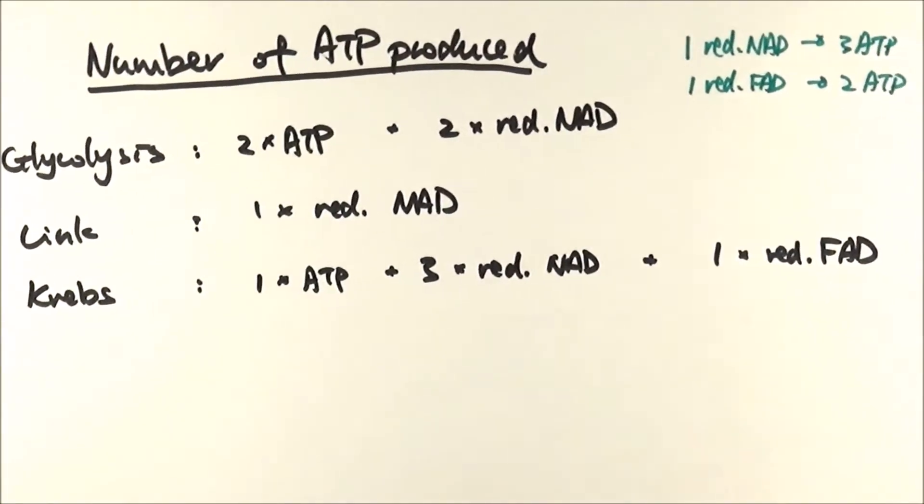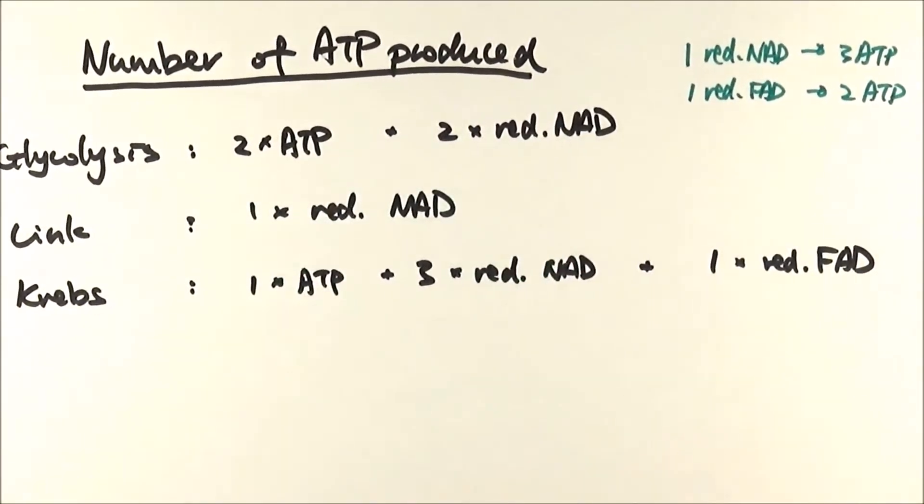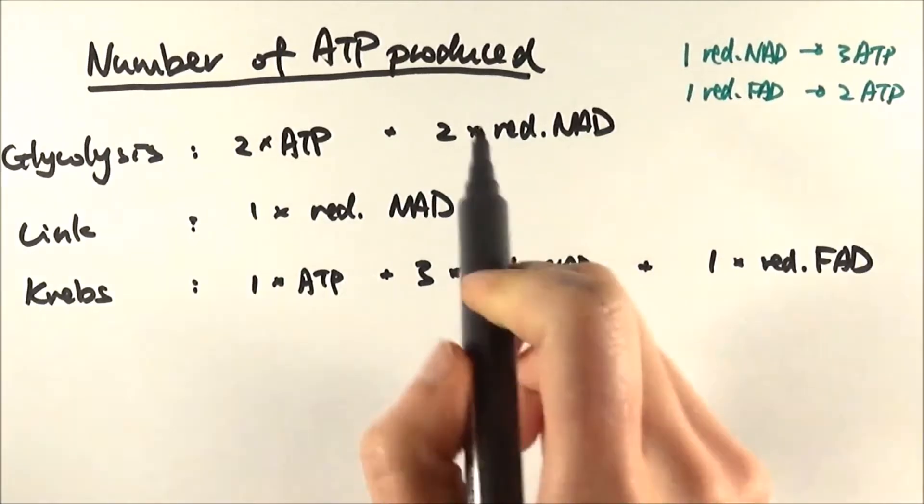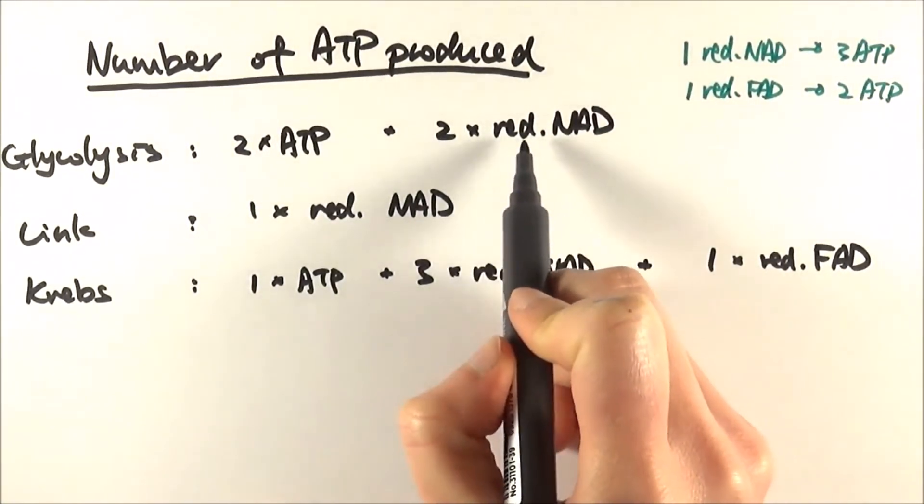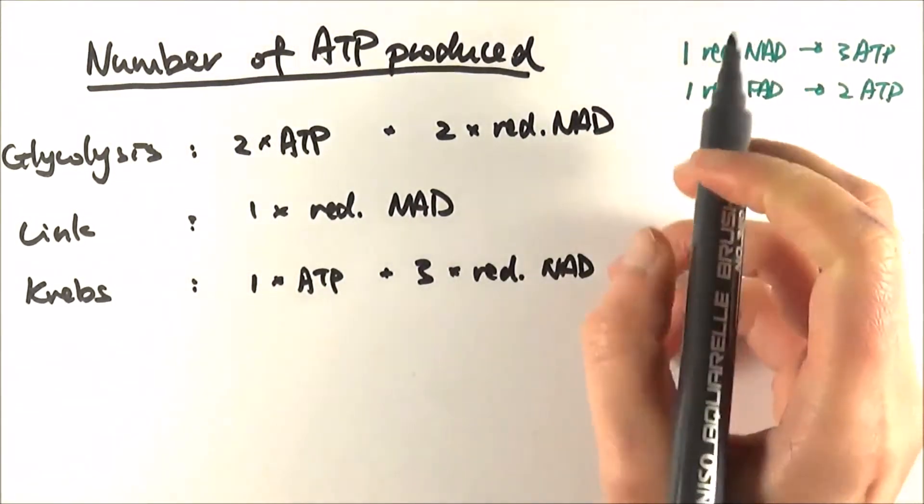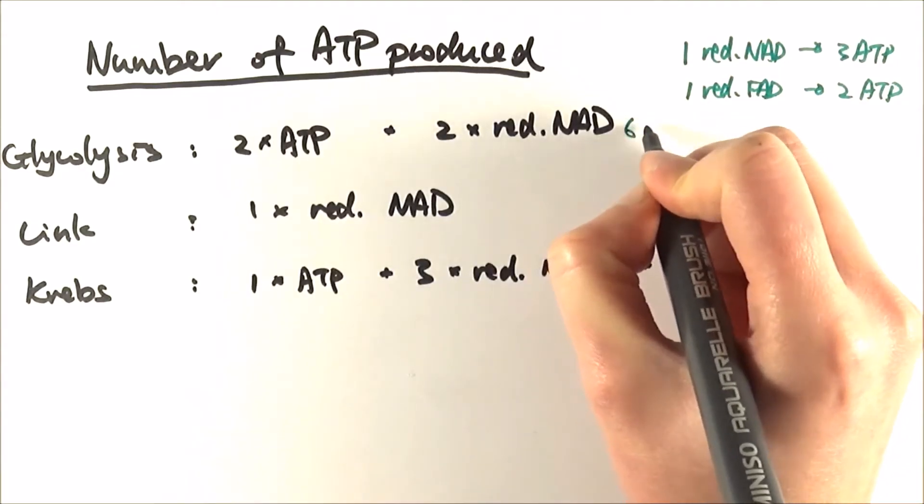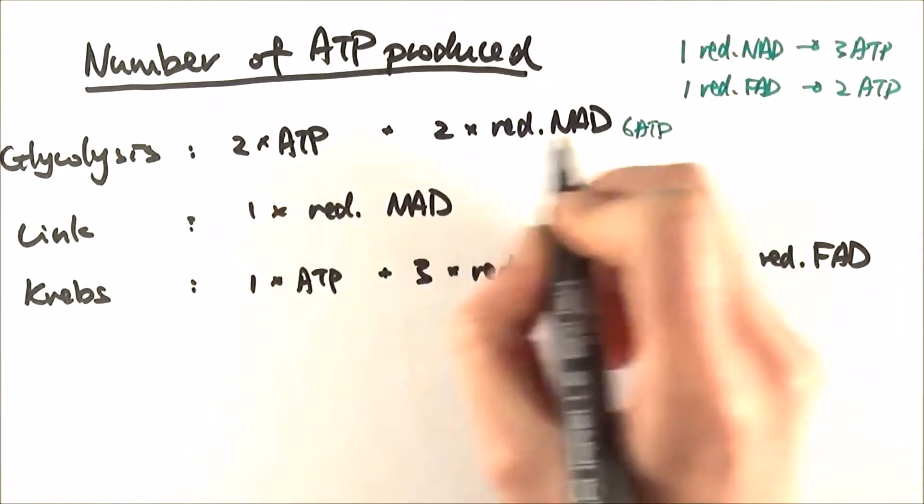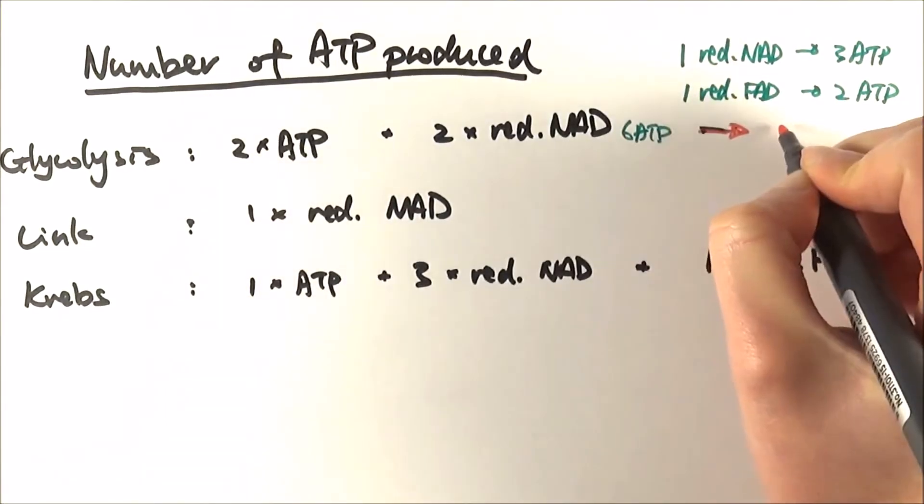So all we need to do now is to review all of this and decide how many is being made. So from 2 reduced NAD, each of them make 3 ATP, so here we can get 6 ATP made. And in total, we have made 8 ATP.